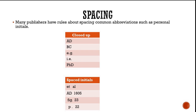Now let's talk about spacing. Many publishers have rules about spacing common abbreviations such as personal initials. There are examples of closed-up initials — such as AD, BC, BHD — written without any space. There are also examples of spaced initials, such as et al., AD 1605, figure 23, page 22, where there is a space between the elements.